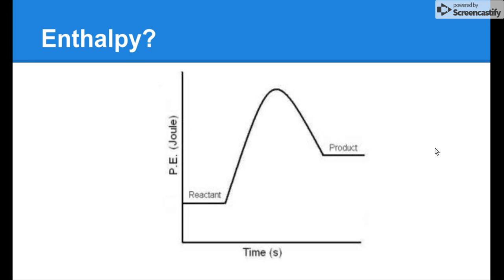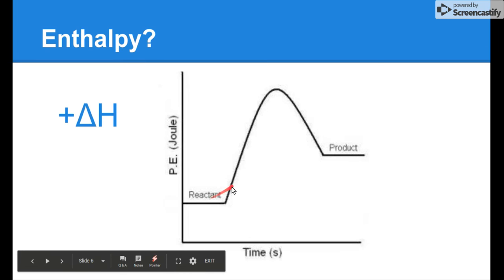Take a look at this energy graph — you need to be able to interpret these and understand what's going on. What's the enthalpy sign for this reaction? The answer is positive delta H. At the beginning we have our reactants at a lower energy, and our products end up at a higher energy. From reactants to products, we gain energy — so this is a positive delta H.